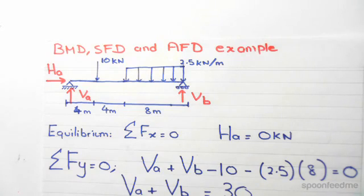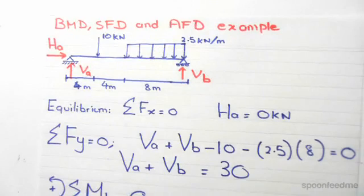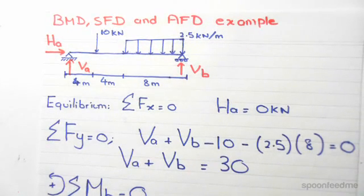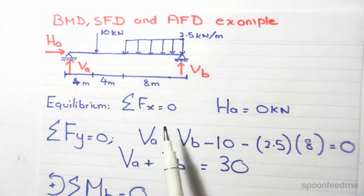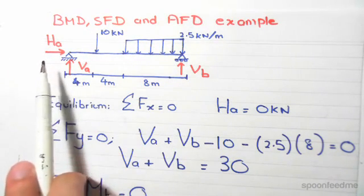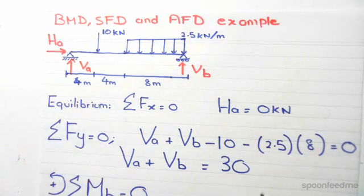The first thing we always have to do is work out the magnitude of the reaction forces through applying equilibrium. The first thing we do is the sum of forces in the horizontal direction. This has to equal zero. Since HA over here is the only horizontal force, therefore HA has to equal zero kilonewtons.